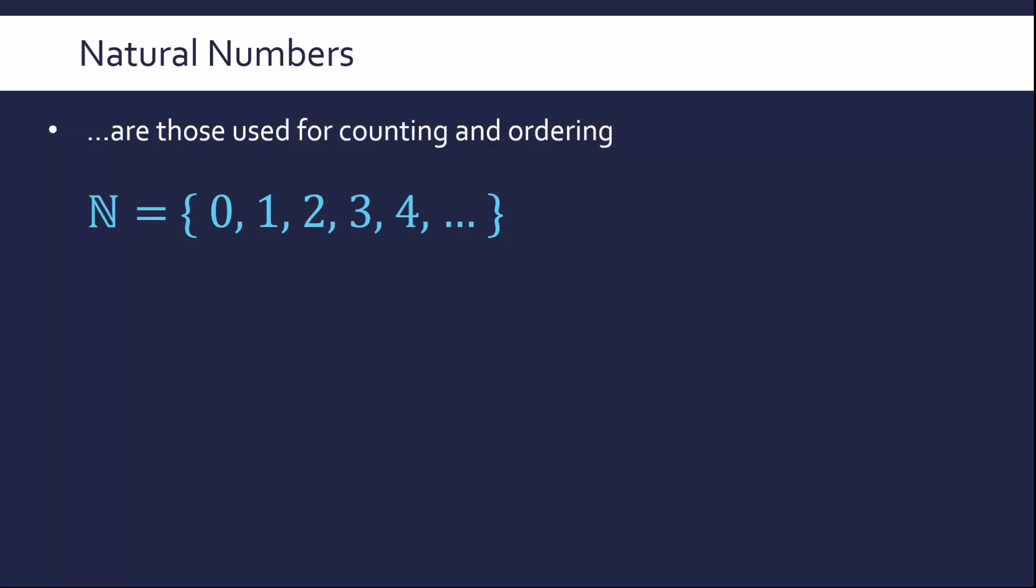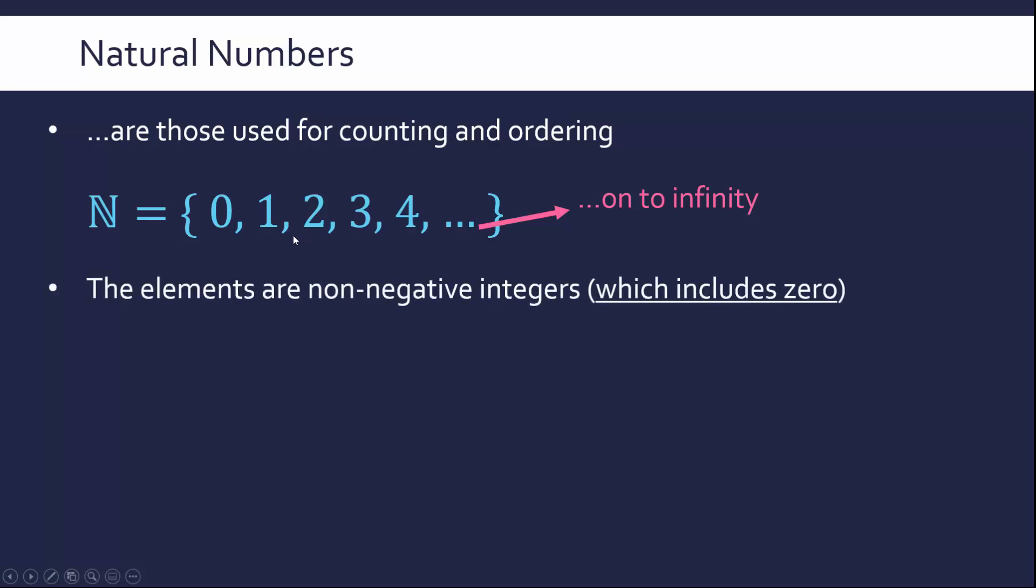Here we are allocating the letter N for natural numbers. We'll come back to that particular font in a second. You can see we've got set notation, curly braces, and numbers within it. Natural numbers include all the integers from 0 to infinity. The dot dot dot refers to carrying this pattern on. I'm not going to write out until infinity for obvious reasons, but we're going to infinity.